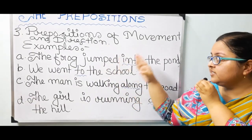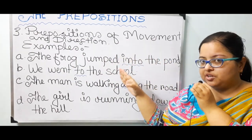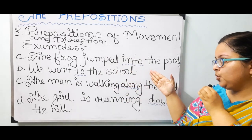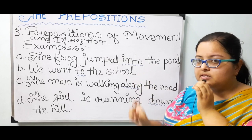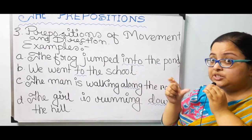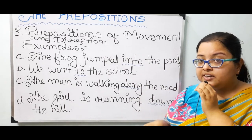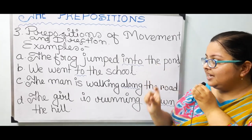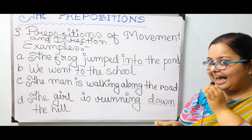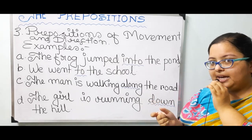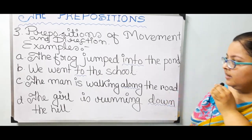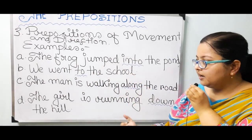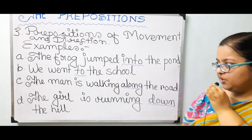Number three: prepositions of movement and direction. Example a: 'The frog jumped into the pond.' Here 'into' is showing the direction where the frog had gone — into the pond. Example b: 'We went to the school.' Here 'to' is the preposition showing direction.